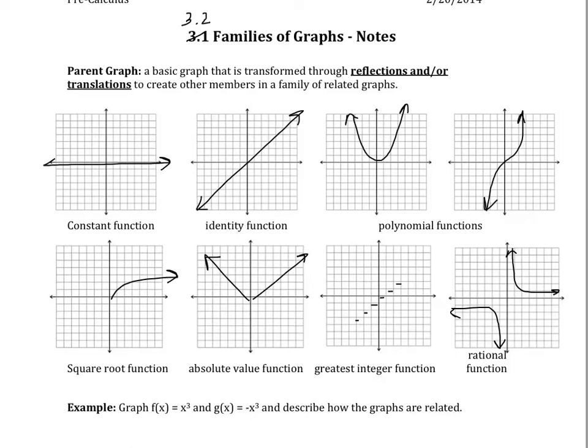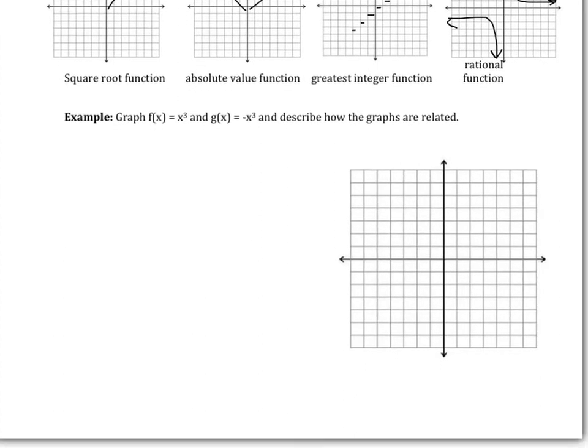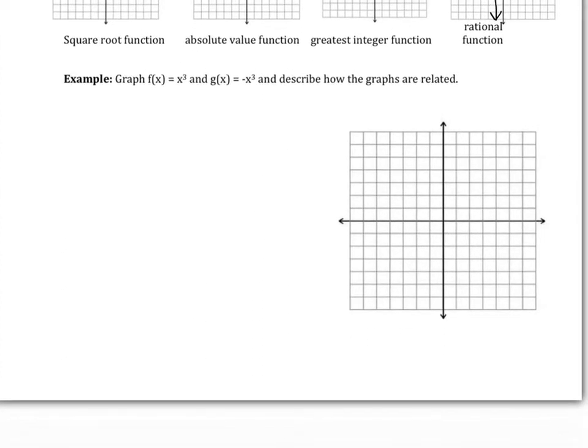And those are examples of what those parent graphs look like. So what we want to do is we're going to observe what's going to happen when we graph a parent graph of x cubed and then see what happens when we make it negative. And we're going to look at the translation. So if I'm going to make two tables of values, x and f of x, and then we will do, let me choose a different color actually. We'll do this one in green here. We'll do x and g of x.